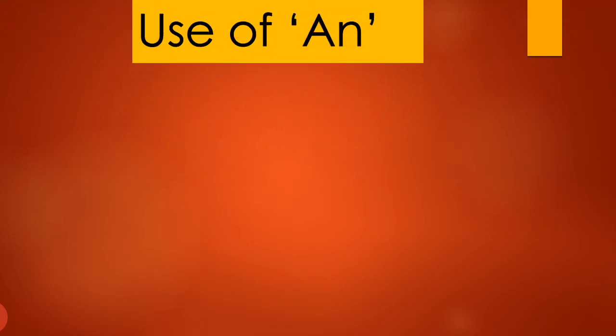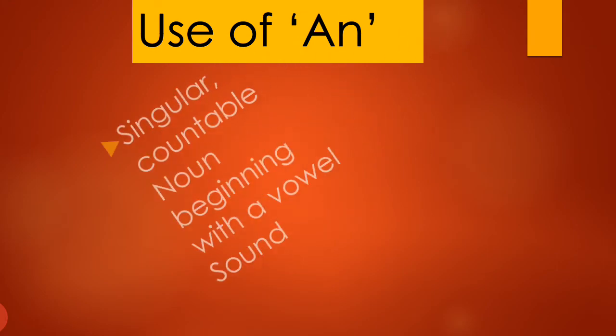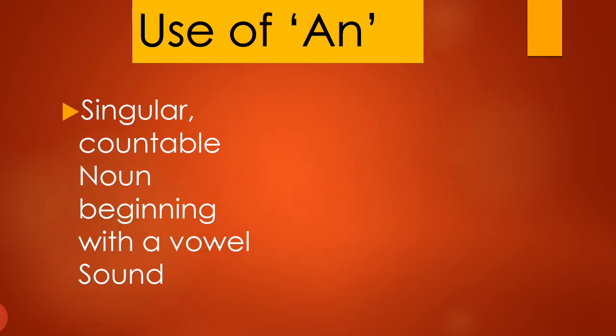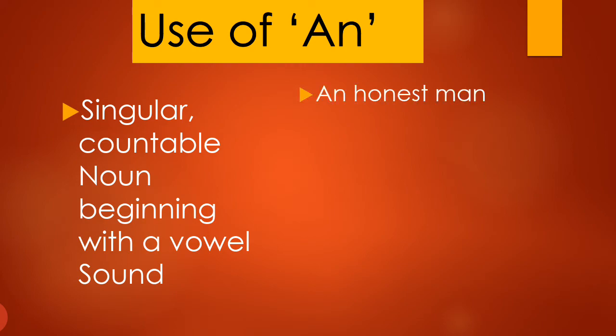Next is the use of 'an'. An is used before singular countable nouns beginning with a vowel sound — A, E, I, O, U. Aisi nouns jo singular hai aur countable hain, aur jo vowel sound se start hoti hain. For example, 'an honest man' — we pronounce it 'honest', starting with an O sound, so we use 'an'. An umbrella — 'umbrella' starts with a U sound.